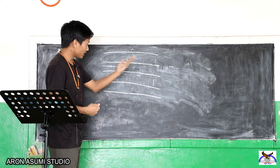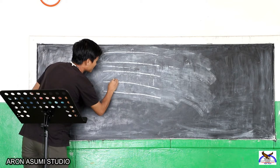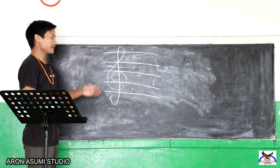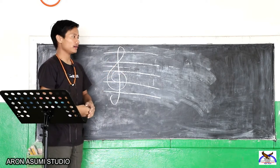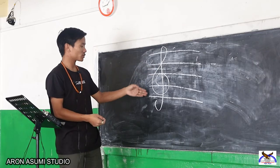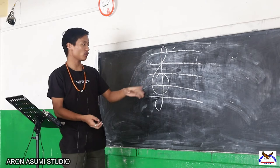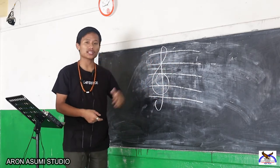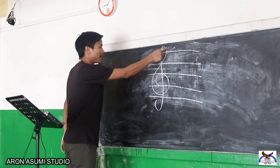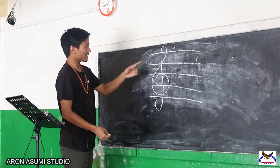Now, before, the lines and spaces did not have names — just random numbers 1 through 5. But after I insert this drawing, it's no longer just a set of 5 lines and 4 spaces with random numbers. We call this sign the treble clef. After this is placed on the stave, the lines and spaces will have names.